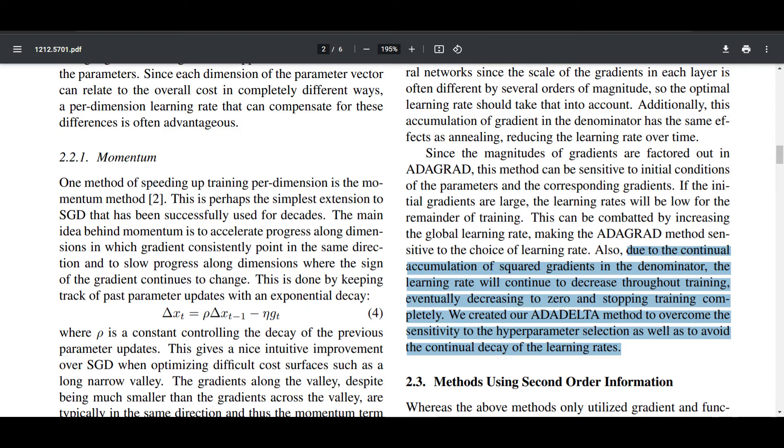To overcome this issue, AdaDelta was born. In the AdaDelta paper by Matthew Zeiler, he talked about this drawback of AdaGrad, saying 'due to the continual accumulation of squared gradients in the denominator, the learning rate will continue to decrease throughout training, eventually decreasing to zero and stopping training completely.' We created our AdaDelta method to overcome the sensitivity to the hyperparameter selection as well as to avoid the continual decay of learning rates. The second good thing about AdaDelta is you don't have to choose the learning rate—it automatically computes it.